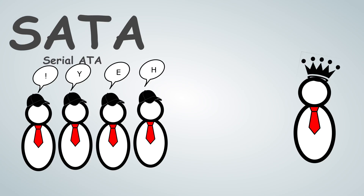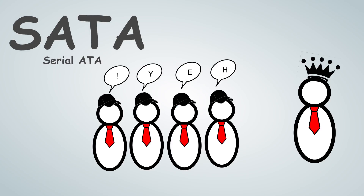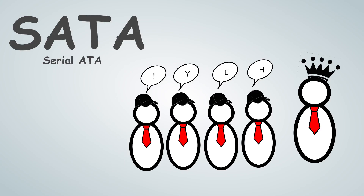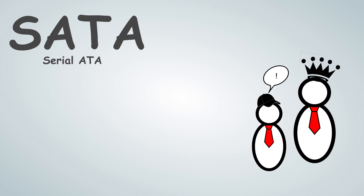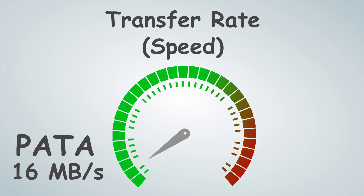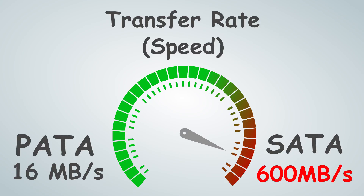Conversely, SATA is a method in which all of the data comes in a straight line. The first character gets to the king first, followed by the second, then the third, and so on with as many characters as needed. No need to wait around for slowpokes to catch up. This results in PATA speed being a max of 16 megabytes per second, dwarfed by today's SATA speeds, which can be a maximum of 600 megabytes per second.